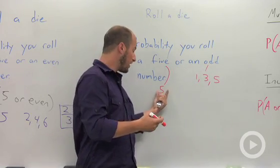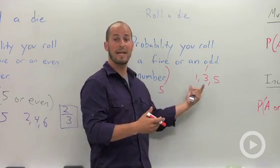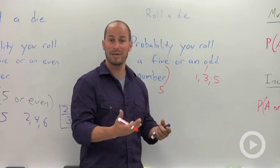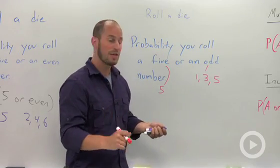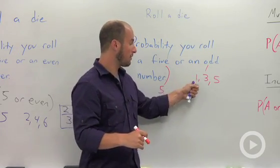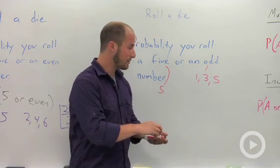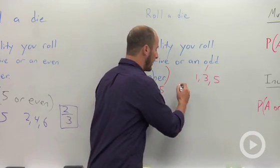But there's overlap now. The number five appears both in the five and the odd category. So we can't count it twice because we would just double count it. So really the only numbers we're concerned with are one, three, and five, leaving us with just one half.